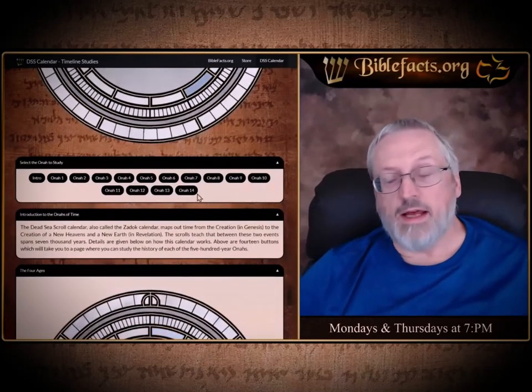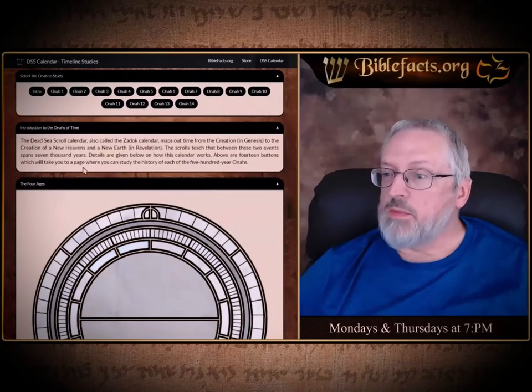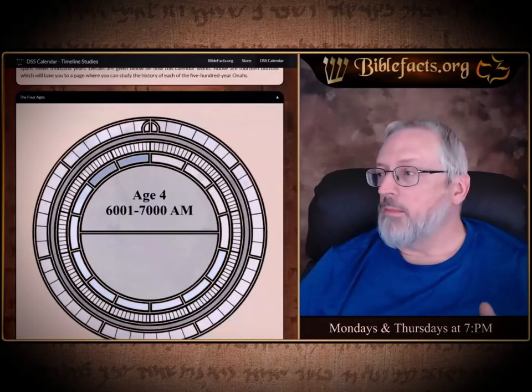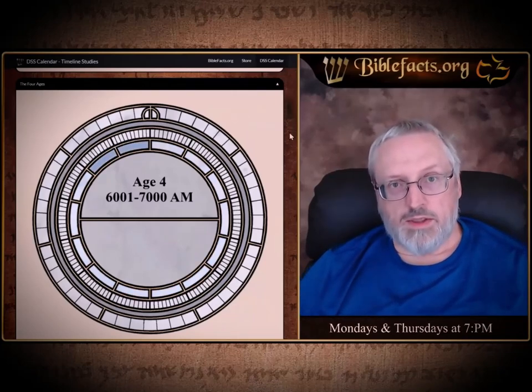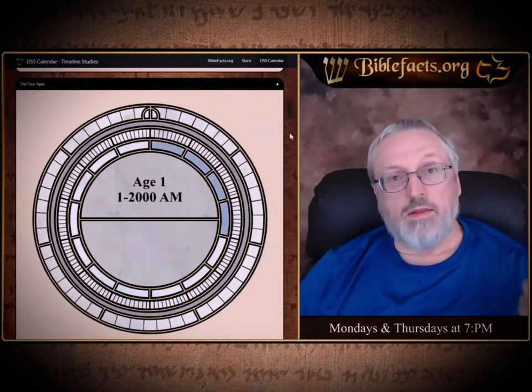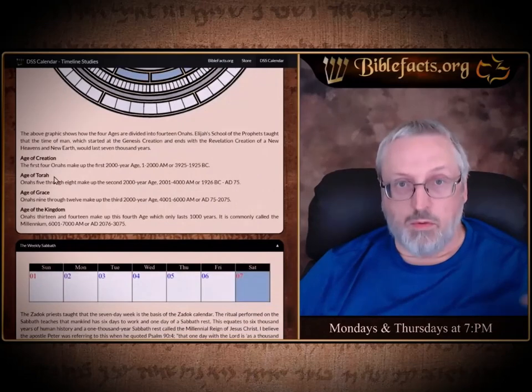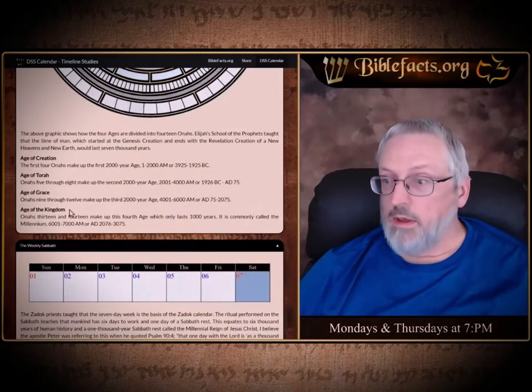Right underneath it is a study of the 14 Onas. This is an explanation of the 7,000 years. Here are the four ages. Anciently, the School of Elijah taught that there are 7,000 years divided into three ages in the beginning, each 2,000 years, and then the last age is simply a 1,000-year reign. They called these the Age of Creation, the Age of Torah (learning and teaching), the Age of Grace, and the Age of the Kingdom.